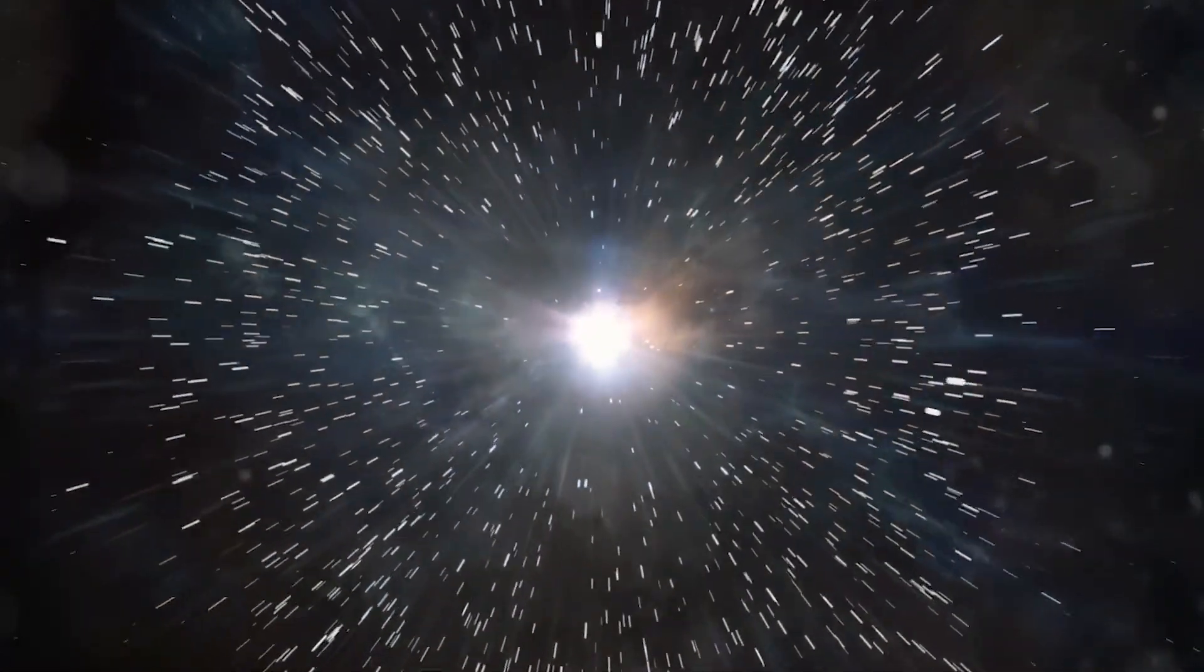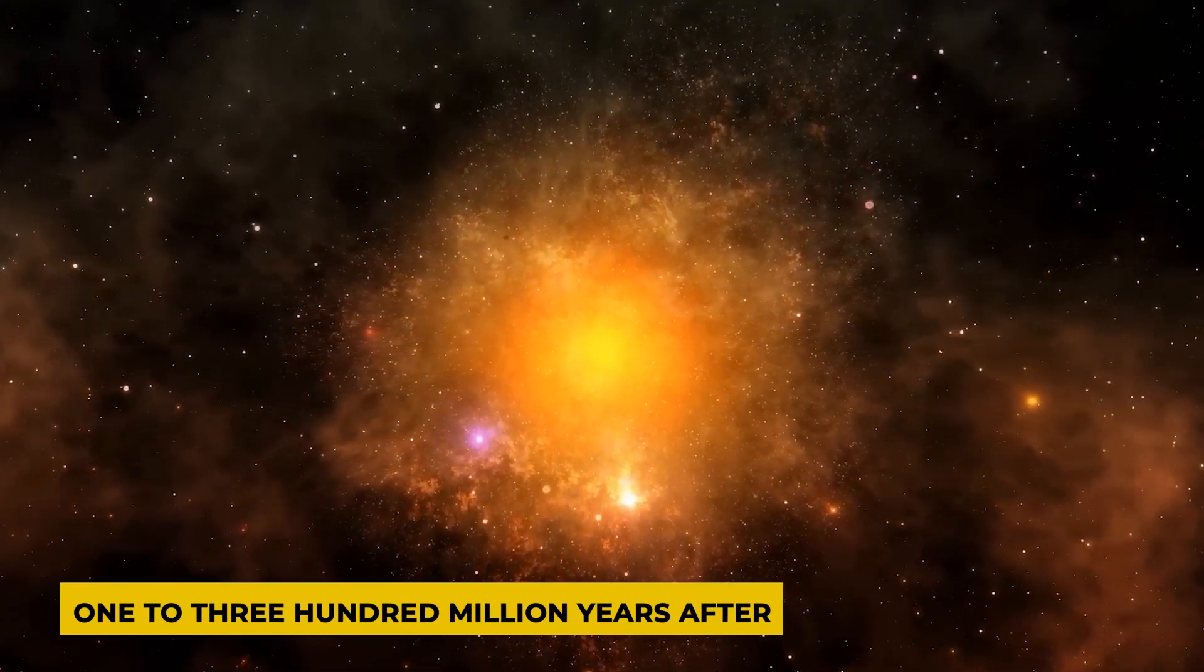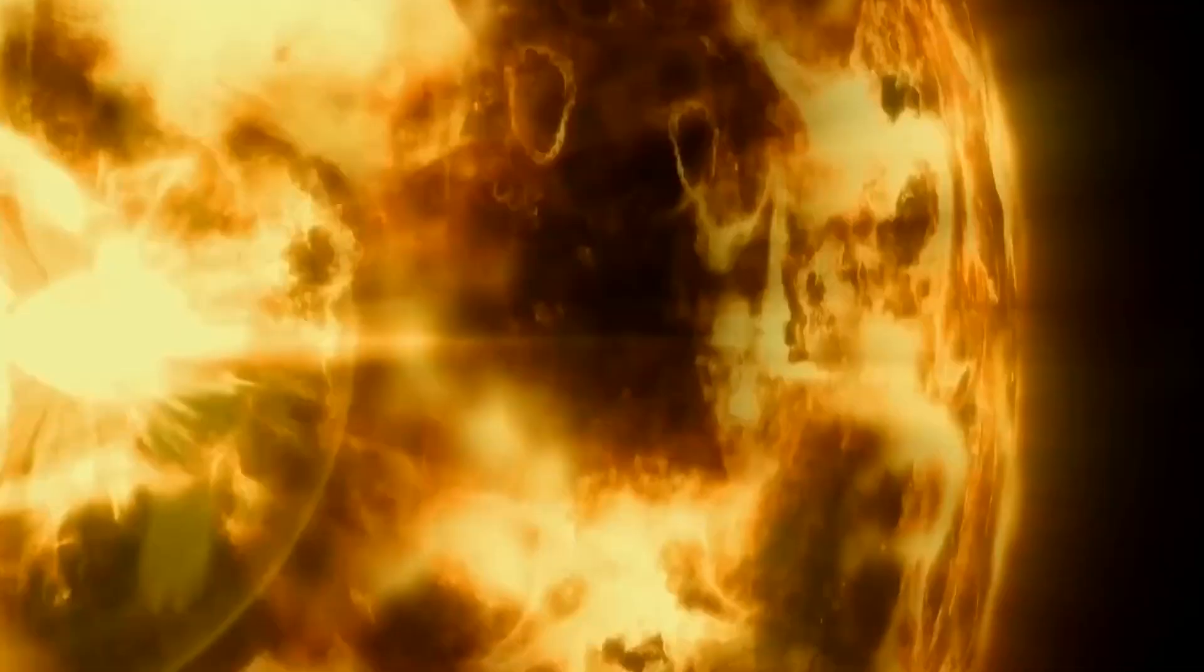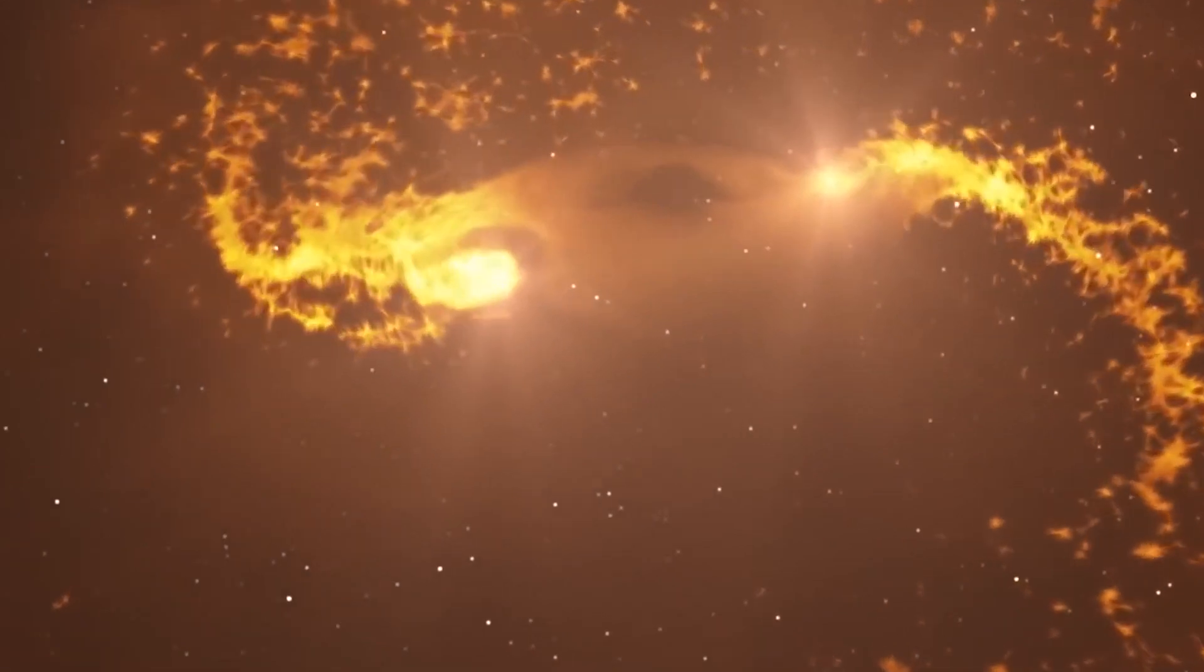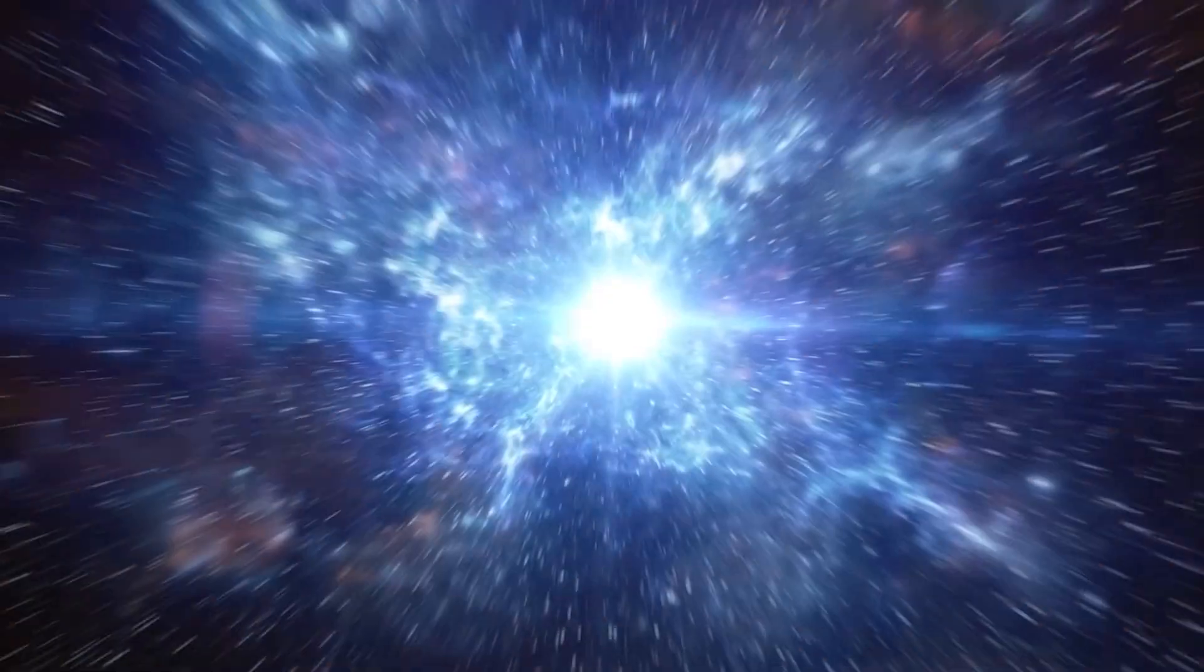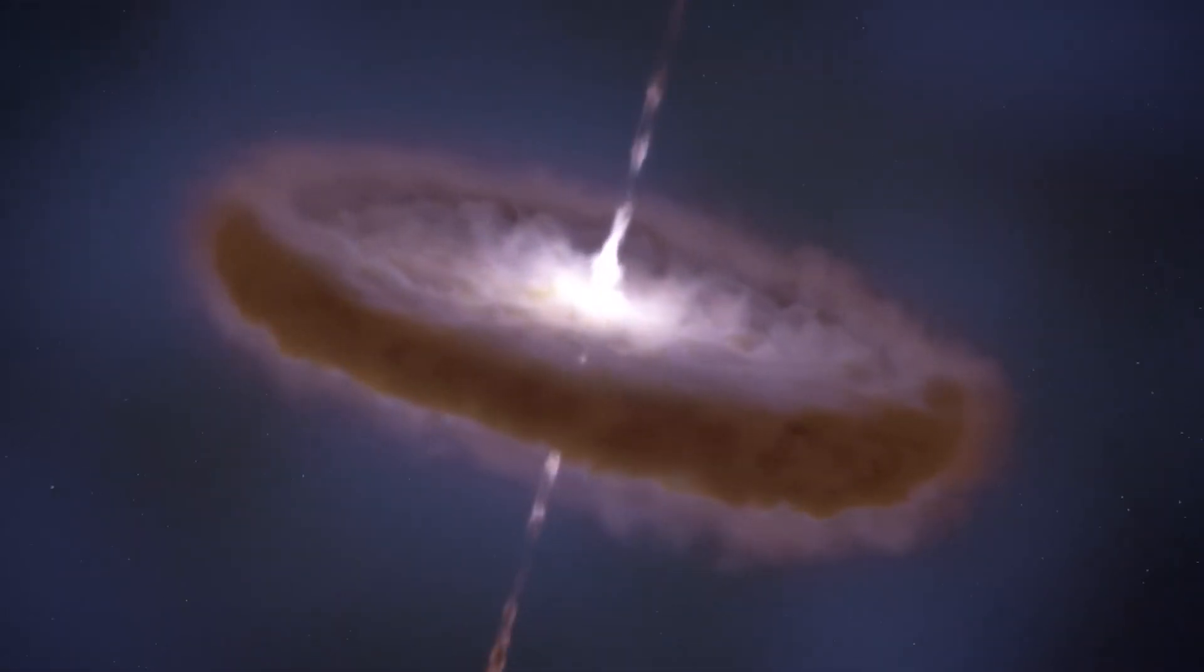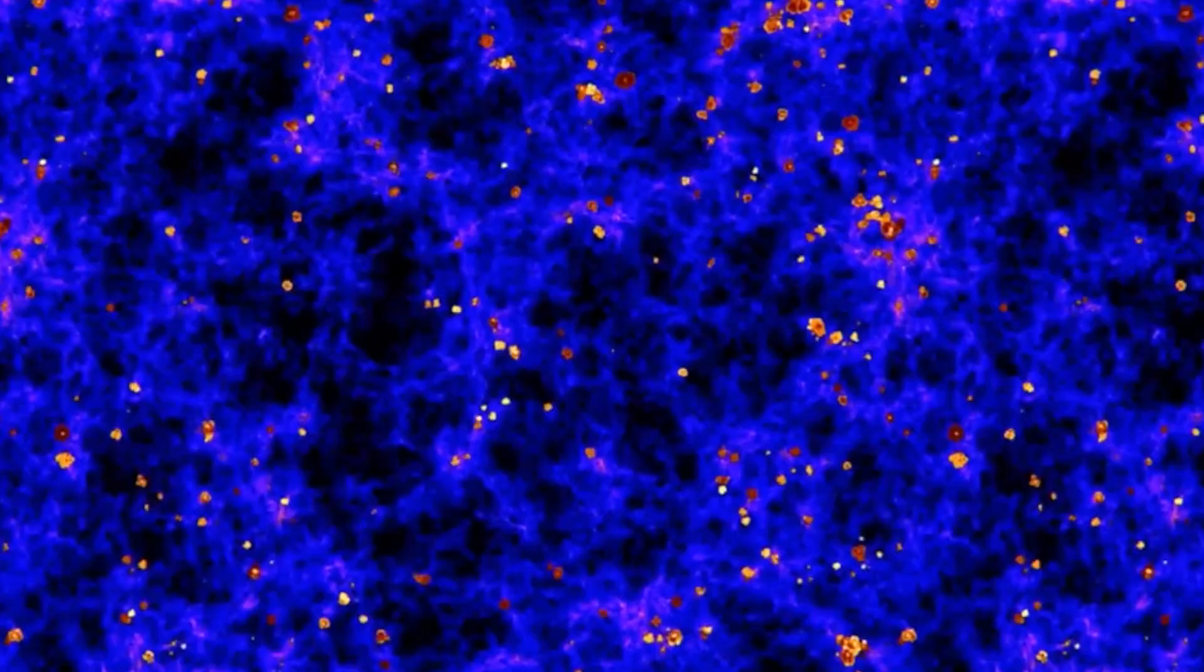According to the prevailing theory of the processes following the Big Bang, the first stars began to form roughly one to three hundred million years after the explosion. These early stars were exceptionally large and bright, playing a significant role in the ionization process of the universe. During this time, elements heavier than lithium, which were produced in the nucleosynthesis stage of the Big Bang, had not yet formed. The first stars were responsible for generating heavier elements through stellar nucleosynthesis.